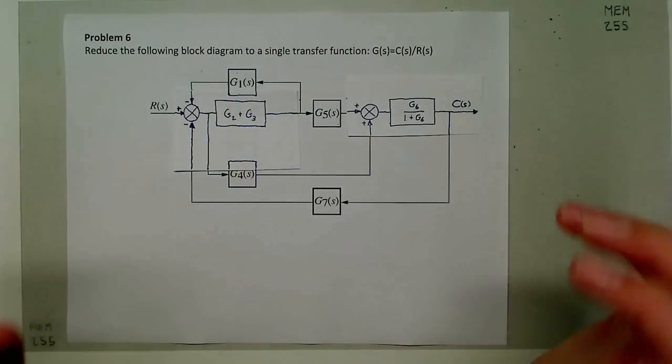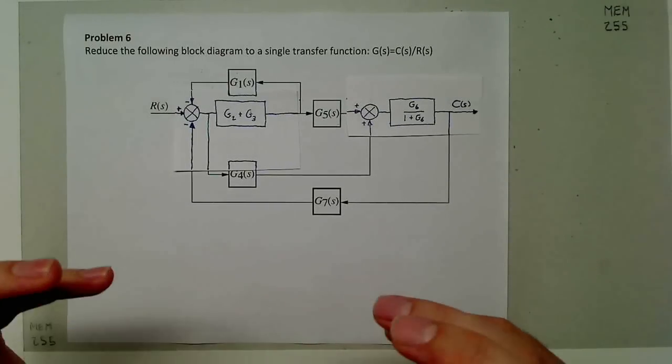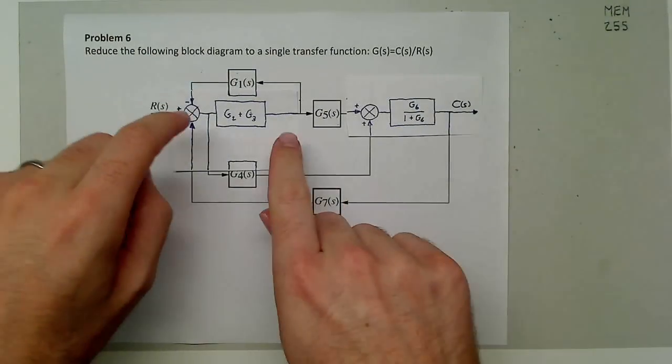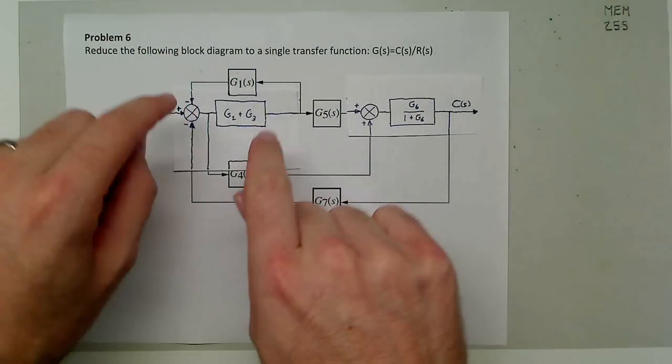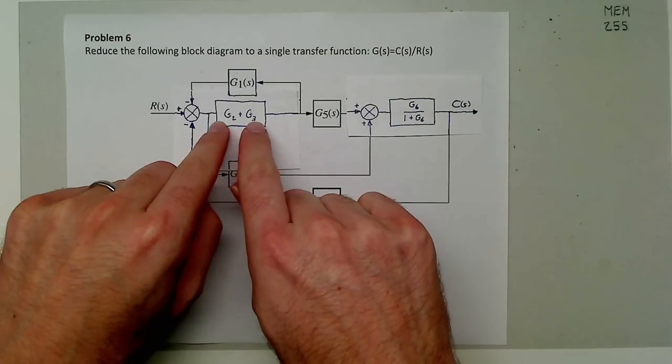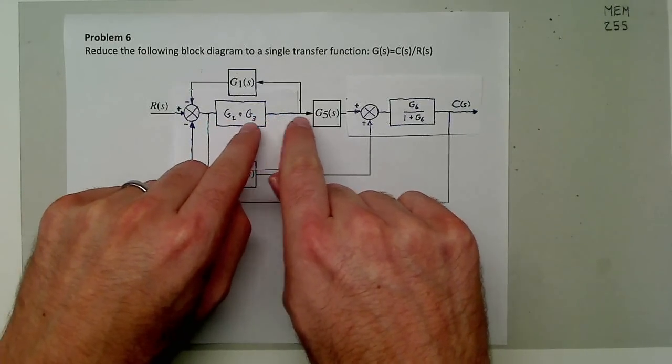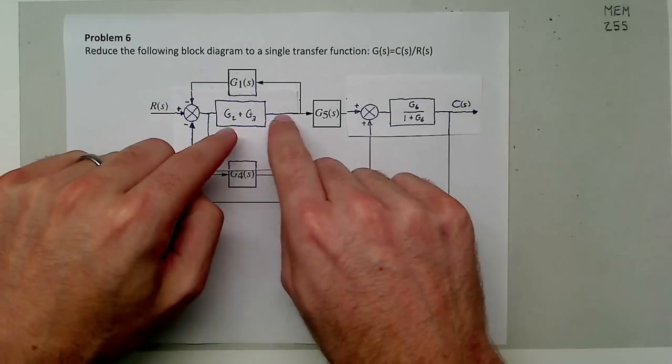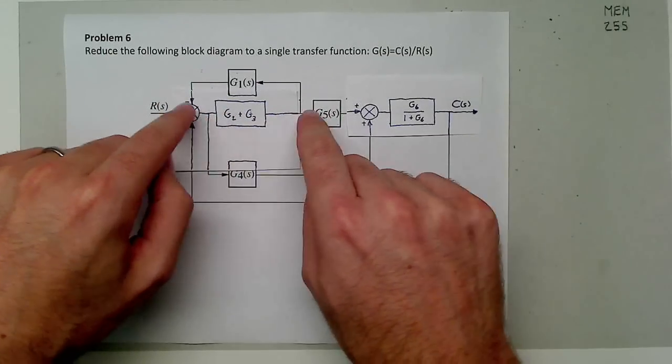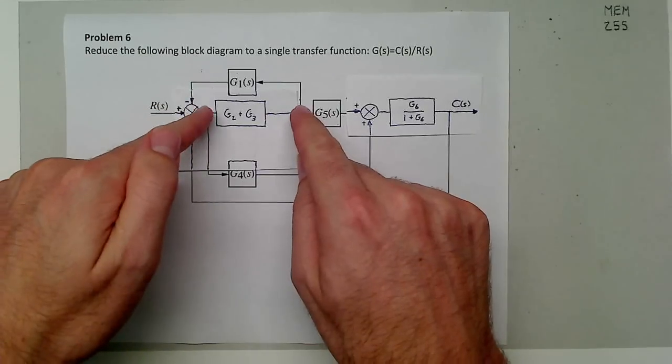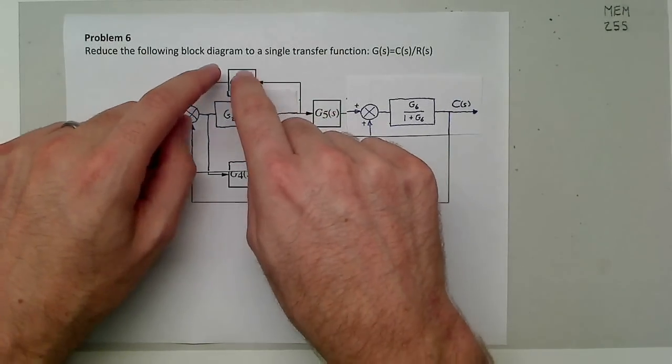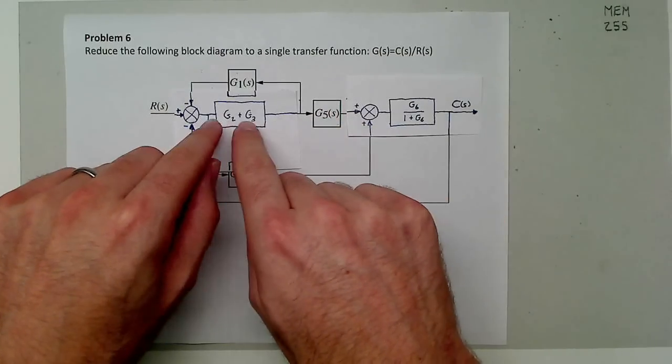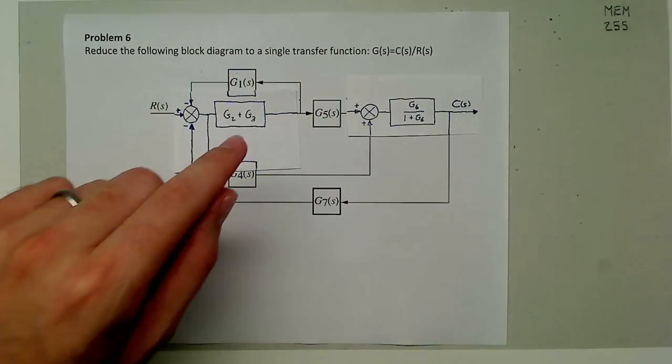Now the next step is probably the most complicated step in this whole process. We want to make these loops more manageable, so we're going to take this g2 g3 block and push it to the right so we break it up into both of these loops. We push it up here and over here. What's going to happen is that this feedback gain is going to be g1 times g2 plus g3, and this forward gain over here is going to be g2 plus g3 times g5.